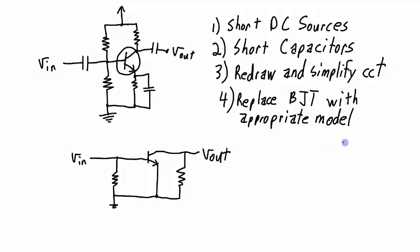So the fourth step is to replace the BJT with the appropriate model, and then the fifth step is to calculate all the parameters that you care about. That might be the input impedance, the output impedance, the voltage gain, current gain, anything like that. In this video, I'm going to focus on this part, replacing the BJT with an appropriate model, and then we're going to look at two different models and look at the pros and cons of those two models.